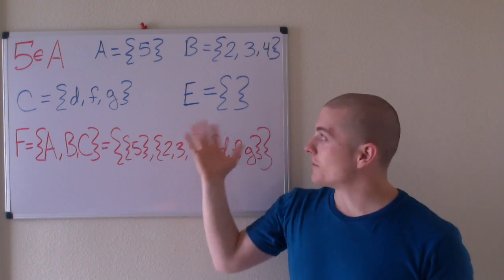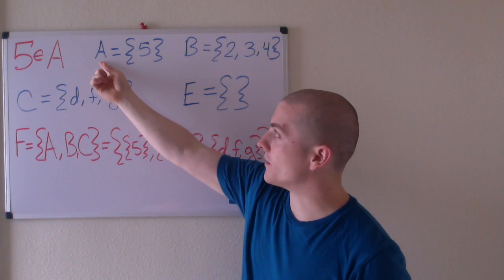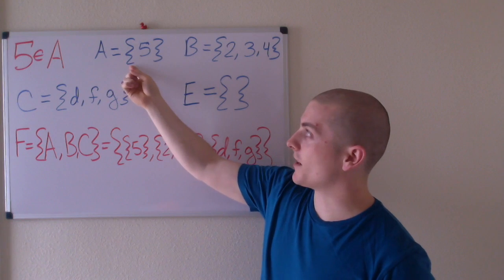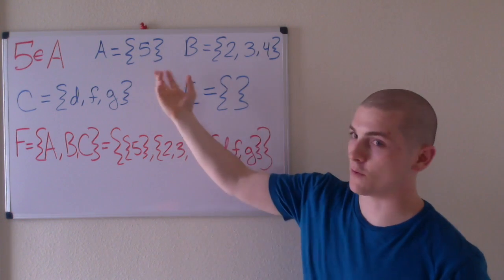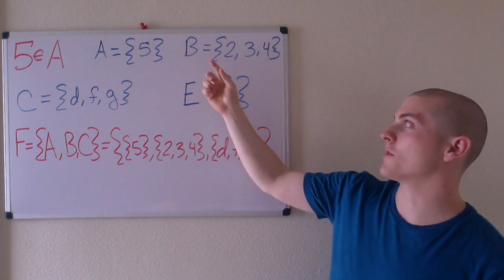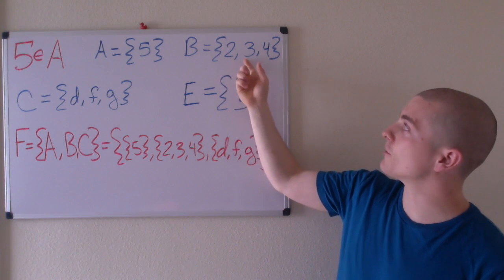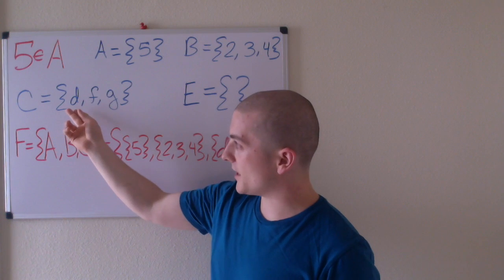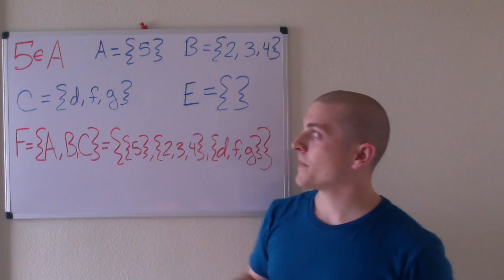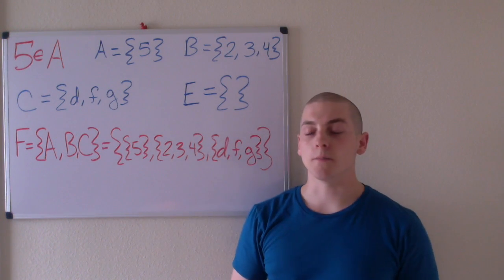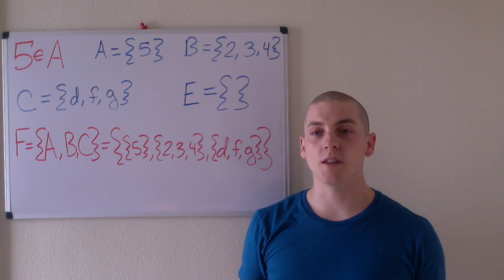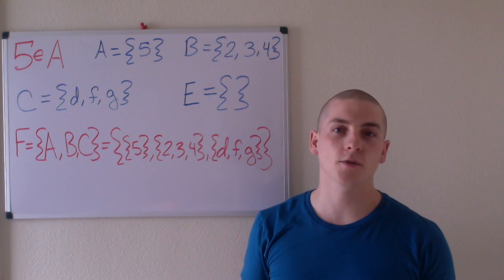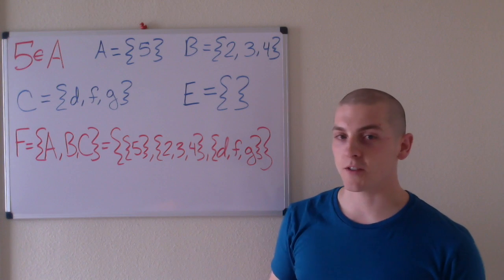So, now let's just walk through these. The set A equals the set containing the element 5, that's how you would read this. The set B equals the set containing elements 2, 3, and 4. The set C equals the set containing elements D, F, and G. Now, D, F, and G, they don't have to be variables. They're either variables, or they could be characters. It just depends on the context.